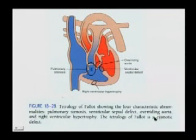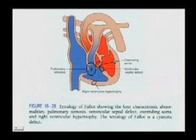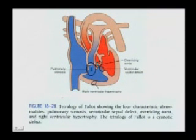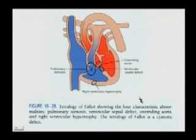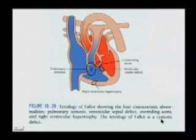This is a cyanotic defect. There will be mixing of the deoxygenated and the oxygenated blood through the overriding aorta. So there will be a mixture of oxygenated and deoxygenated blood showing up systemically, producing the characteristic bluish color of someone with a low oxygen saturation — and that is cyanosis.